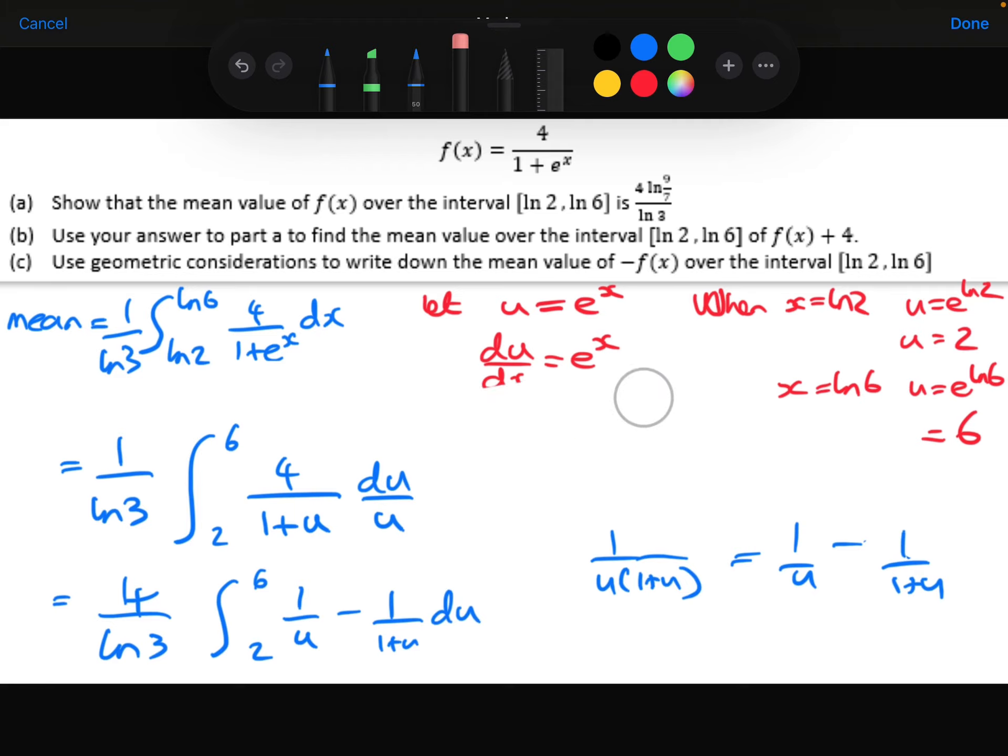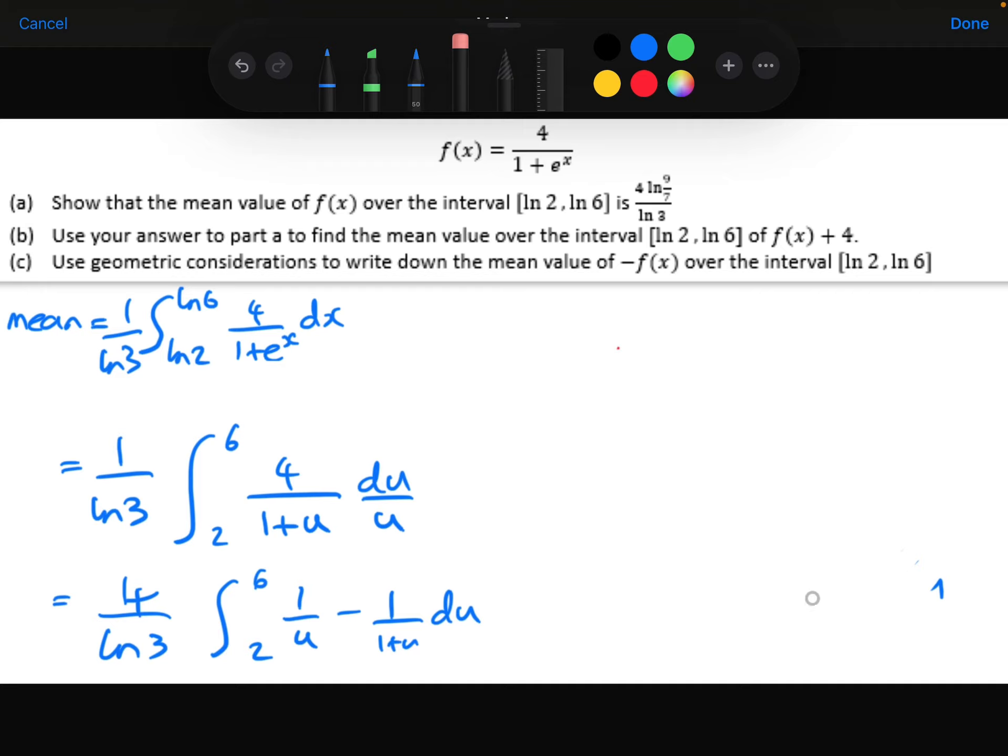Right. Let's get cracking with that then. So the first term is going to integrate to be ln u. The second term, so we've got minus, will be ln 1 plus u.